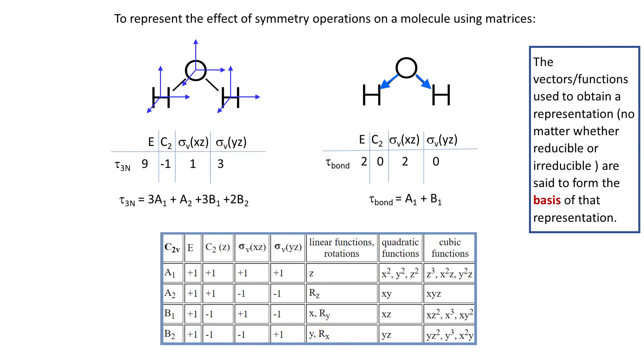So irreducible representations are like building blocks. Irreducible representations are given symbols A1, A2, and so on, and for now I can treat them as random labels. In the future videos we will find out that these labels are in fact not so random. But that's a detail.